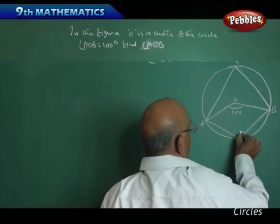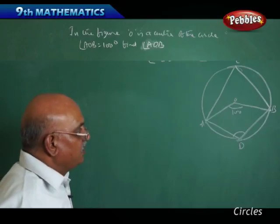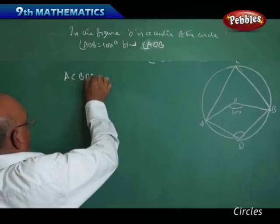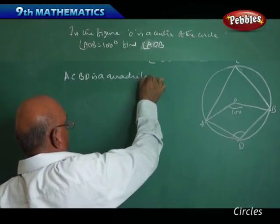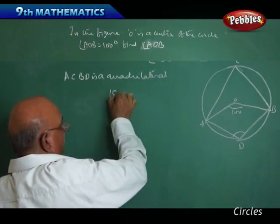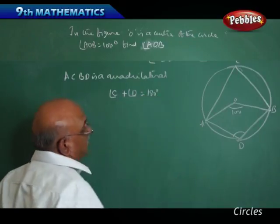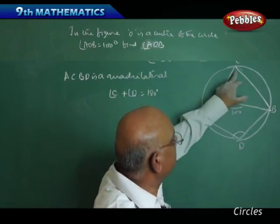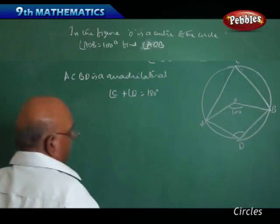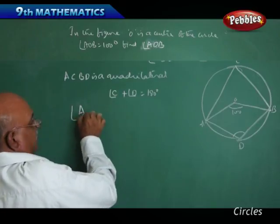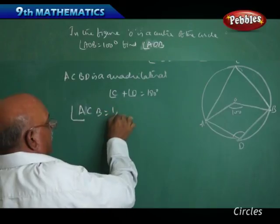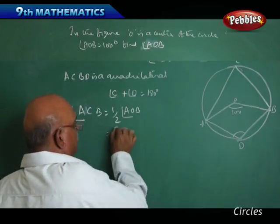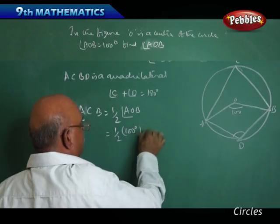If you look into this particular figure carefully, ACBD is a quadrilateral. Therefore, angle C plus angle D is equal to 180 degrees. We have seen that angle O is 100 degrees, so angle C should be half of this. Therefore, angle ACB is equal to half of angle AOB, that implies this is equal to half of 100 degrees, which is equal to 50 degrees.